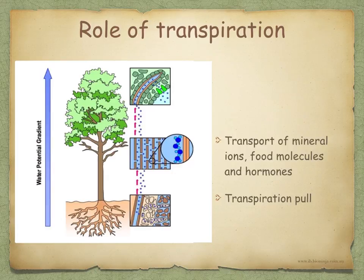Materials such as mineral ions, food molecules, and hormones are moved around the plant dissolved in water, and this water is brought up the plant by transpiration pull. So without transpiration, water would not be plentiful and the transport of materials would not be as rapid.